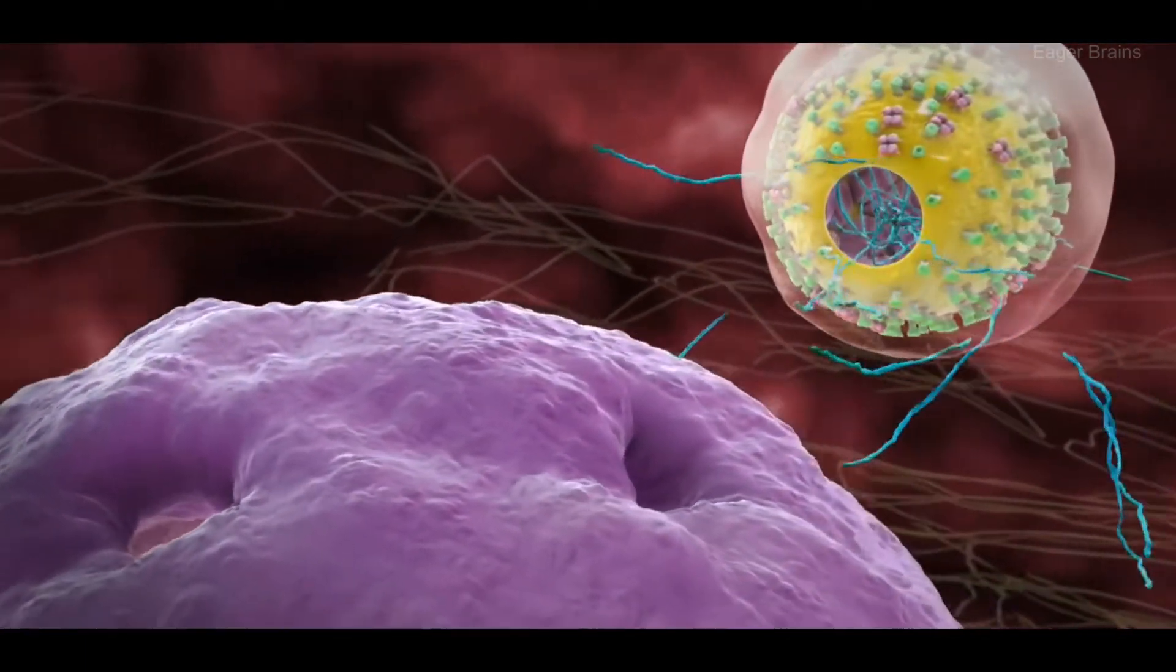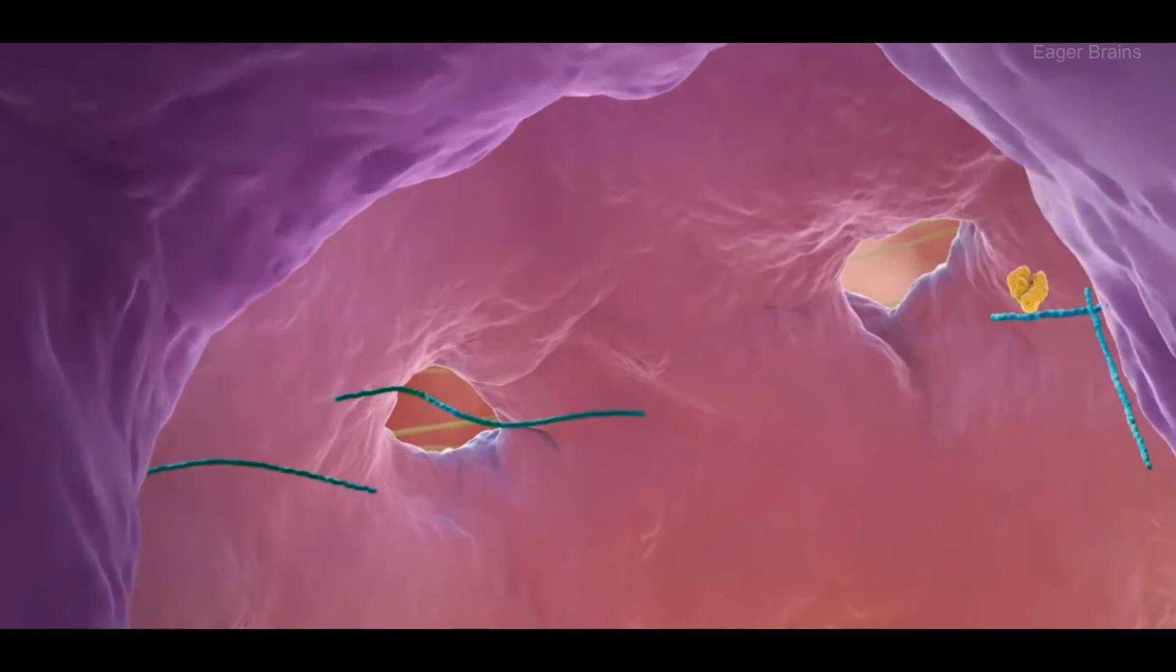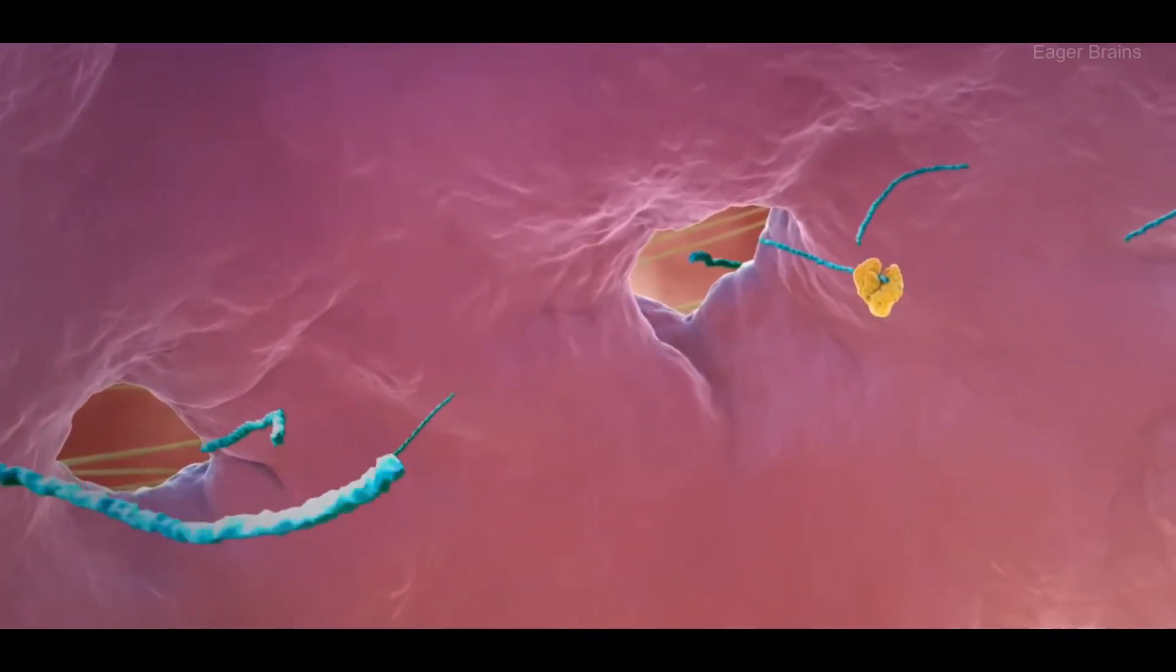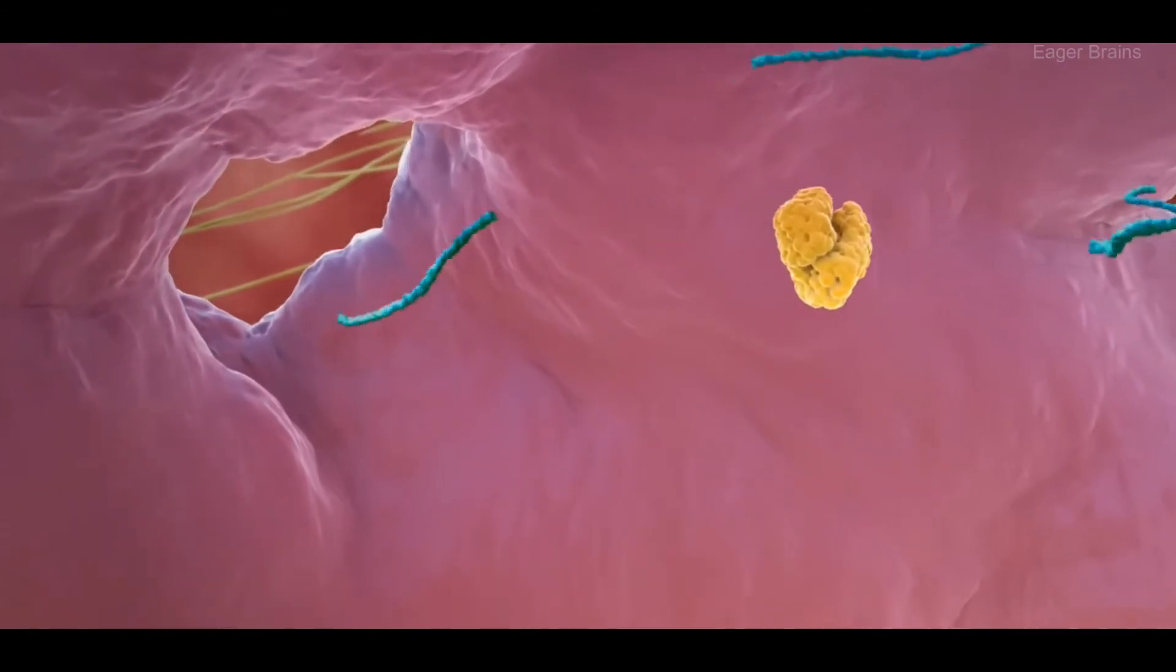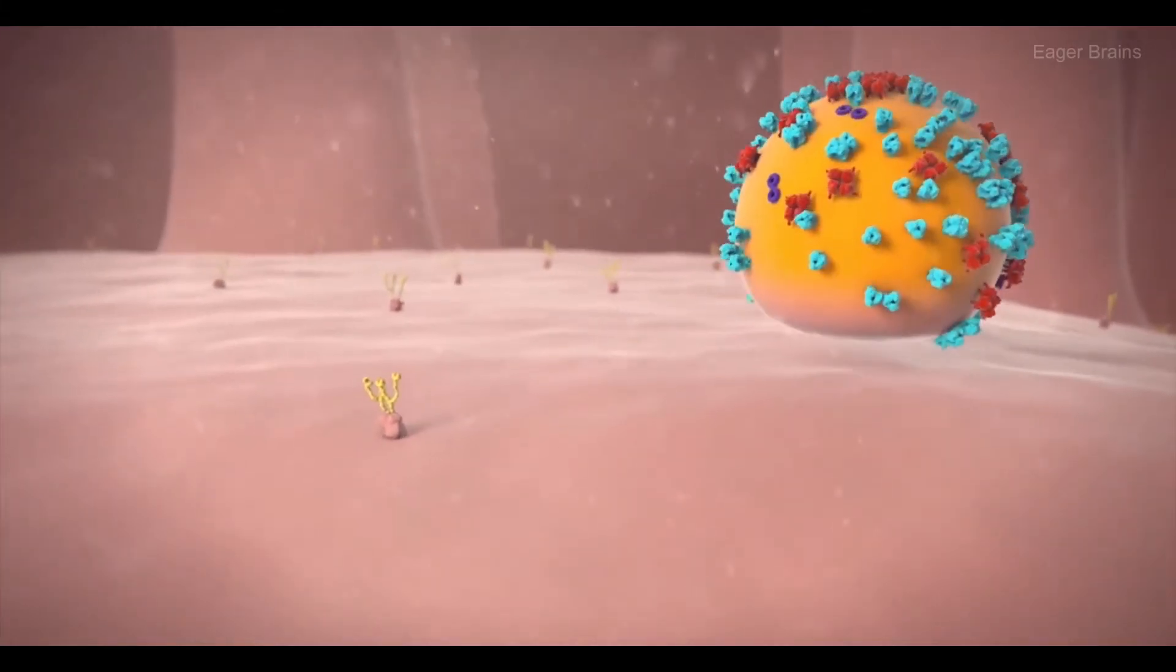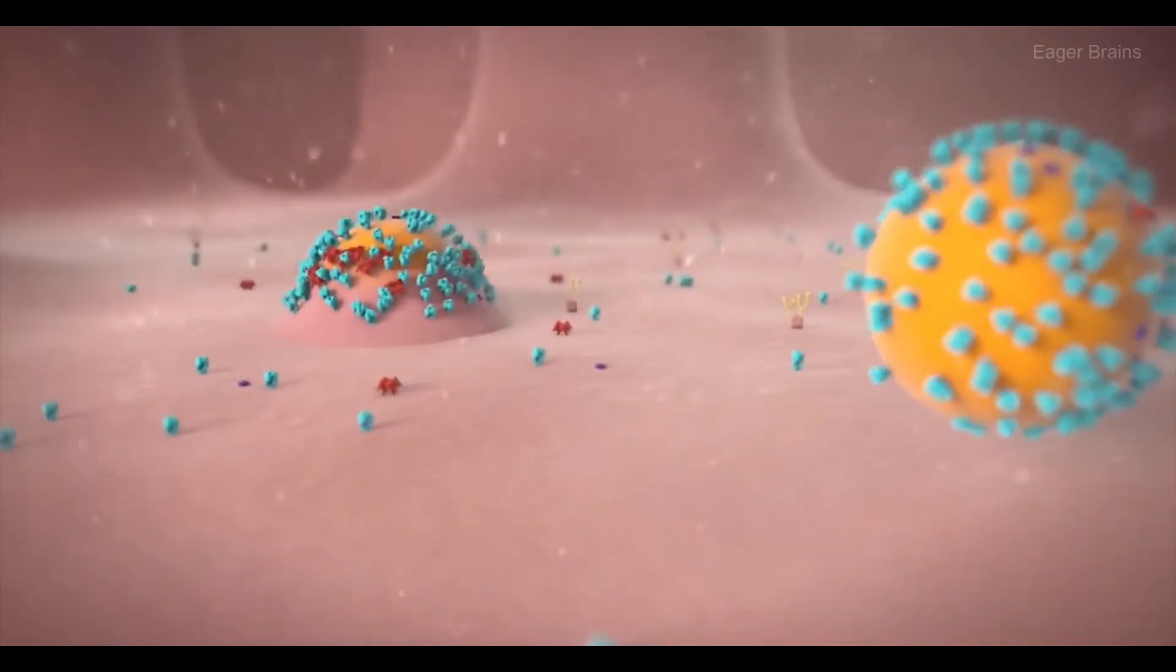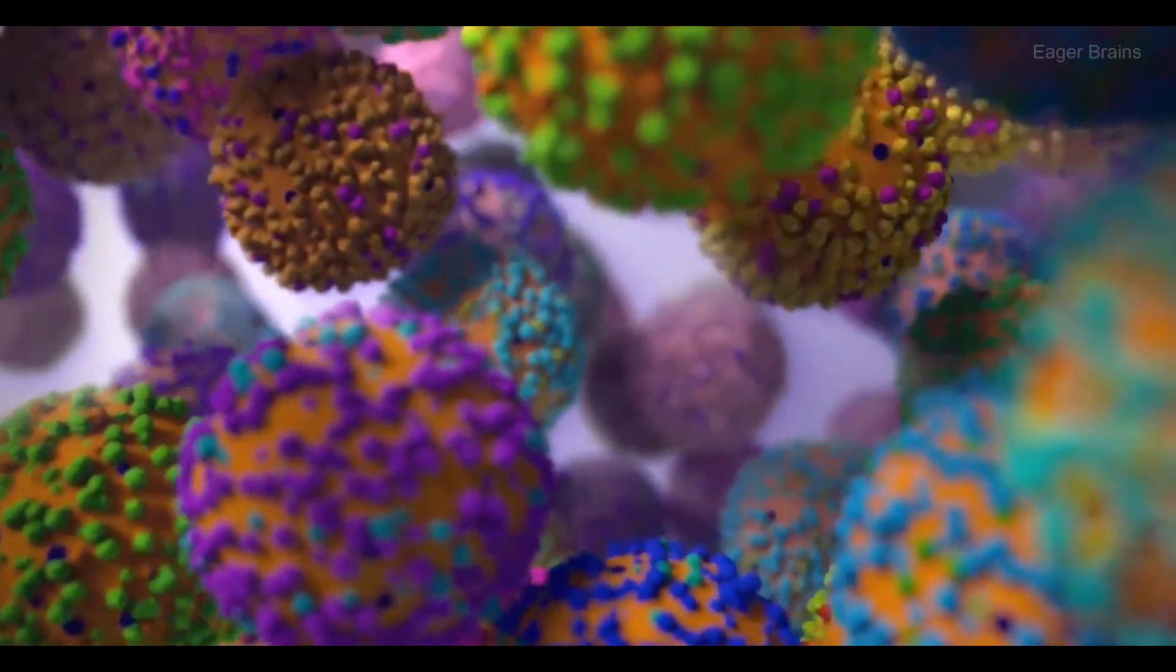The genetic material contains instructions to make more copies of the virus. It quickly takes over the reproduction function of the cell and commands the cell to make more copies. Then the cell membrane rips open and releases millions of copies of the virus, damaging the cell in the process. These copies work in the same way, damaging the immune system.